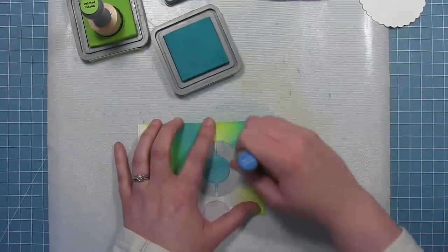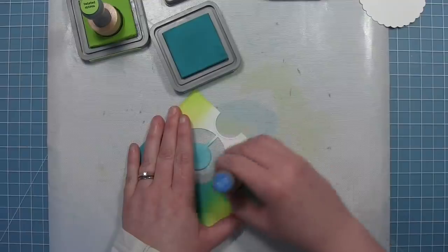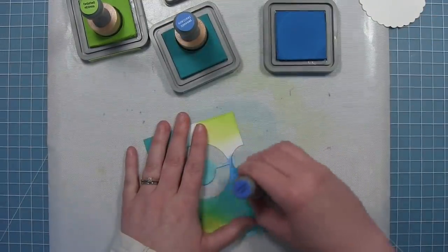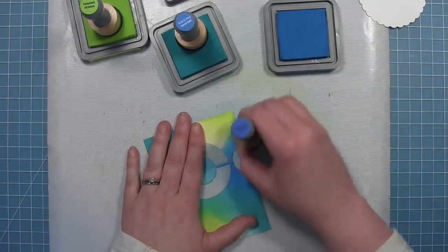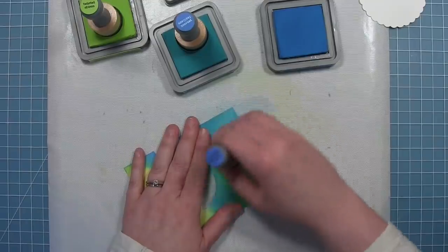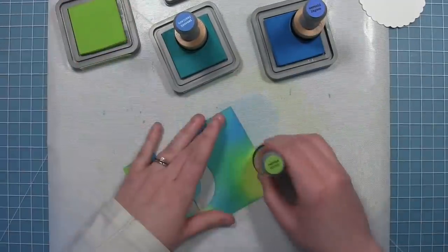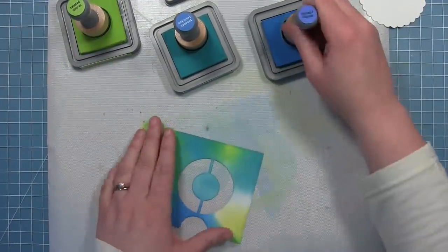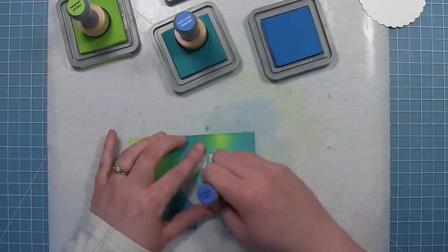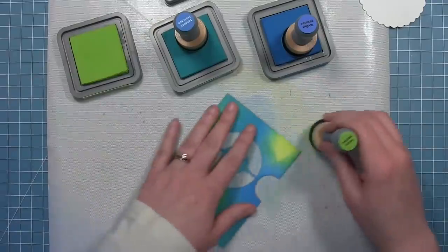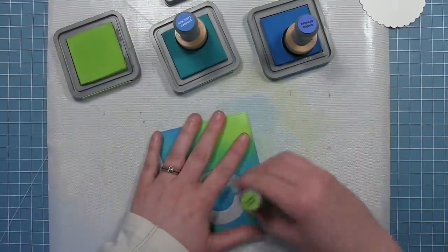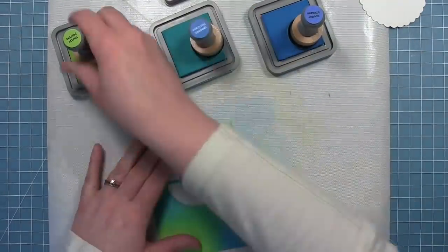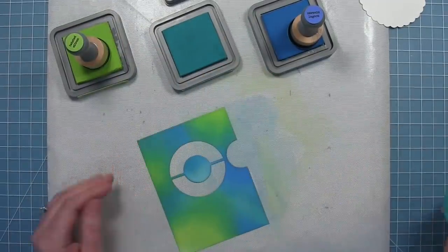You could also do the blending first and then do the die cutting. That's also a possibility. So I'm just going back and forth between my two colors, and it will cut down on the harsh edges between these colors. Now this is the Mermaid Lagoon, so it's a bluer color. And I'm also getting some nice color variation where that Twisted Citron crosses over onto that Mermaid Lagoon and Peacock Feathers. It makes a nice darker green. So it gives a nice ocean-y feel to this. You can see as I go back and forth between the blending tools that those harsh edges will start to blend out, and things will start to come together.